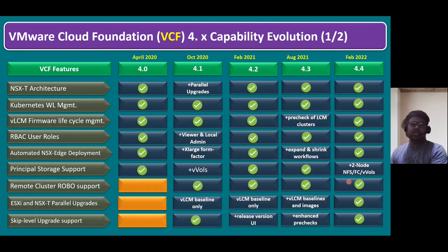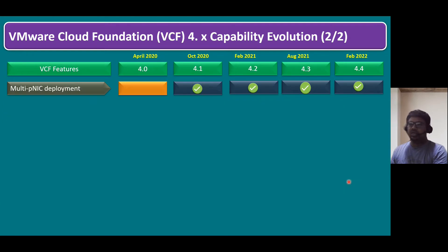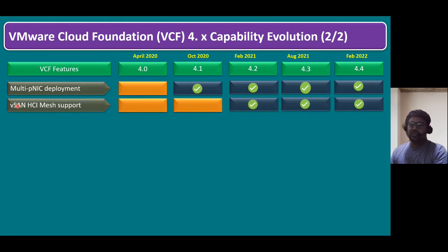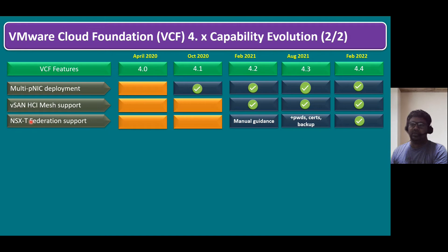Additional features include: multi-physical NIC deployment, available from 4.1 onwards; vSAN HCI Mesh support, available from version 4.2 onwards; and NSX-T Federation, which is also an advanced feature available starting from version 4.2 onwards.